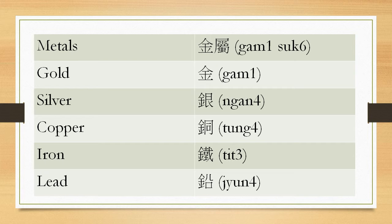Together, what we call in Chinese the five most common metals. We would say them in sequence, which is: 金, 銀, 銅, 鐵, 鉛 — or gold, silver, copper, iron, and lead.